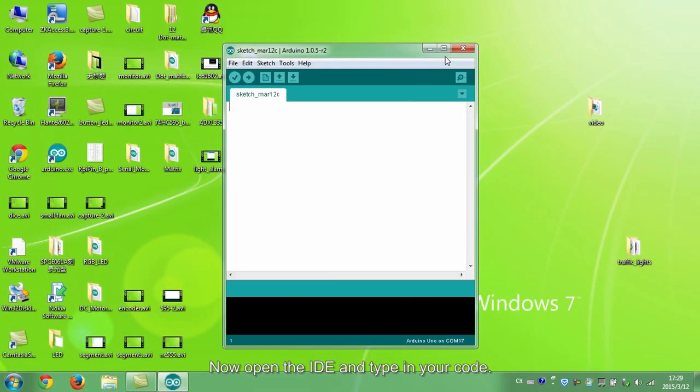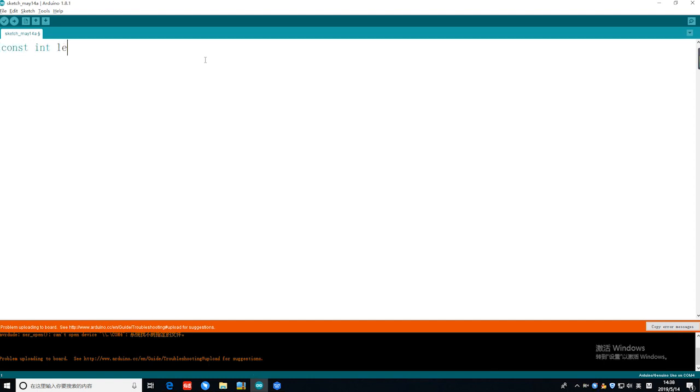Now open the IDE and type in your code. Since the SunFounder UNO board itself already has an LED connected to pin 13, we don't need to use another LED.